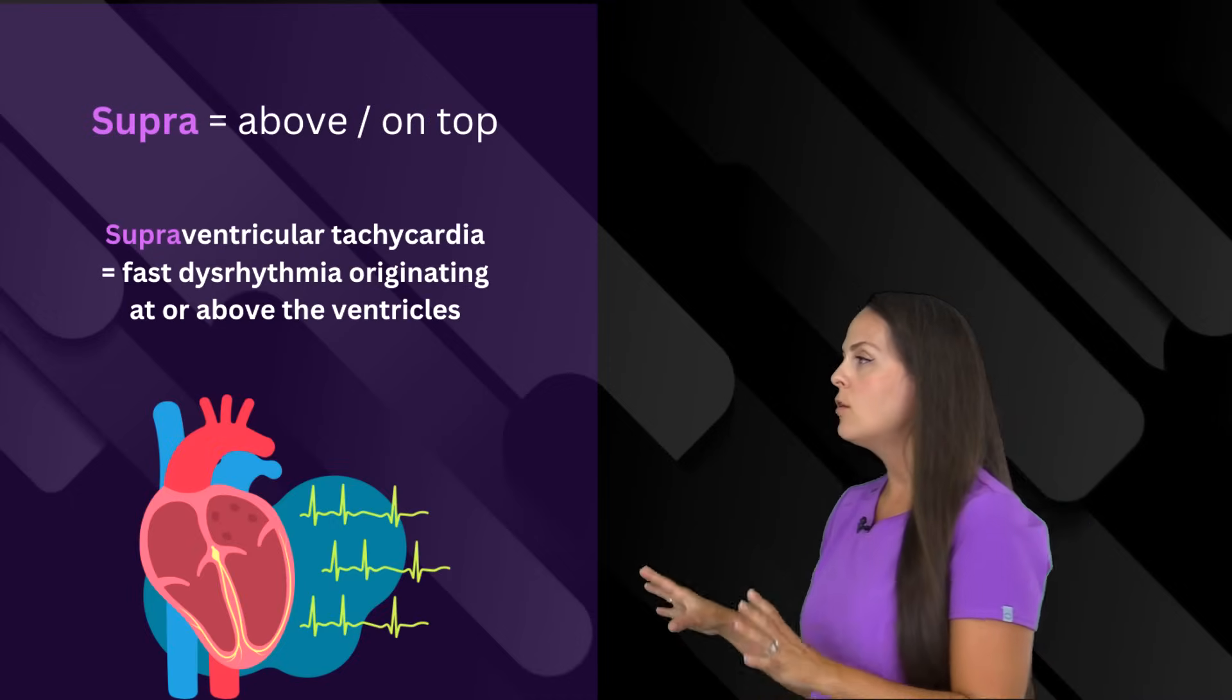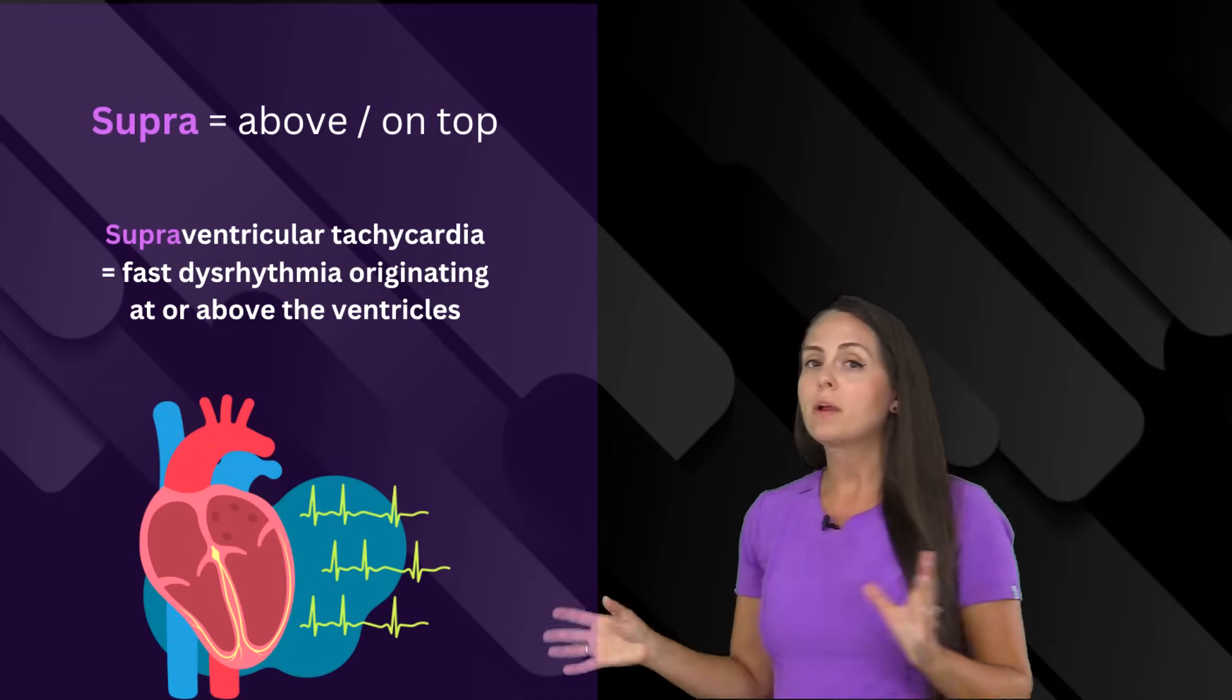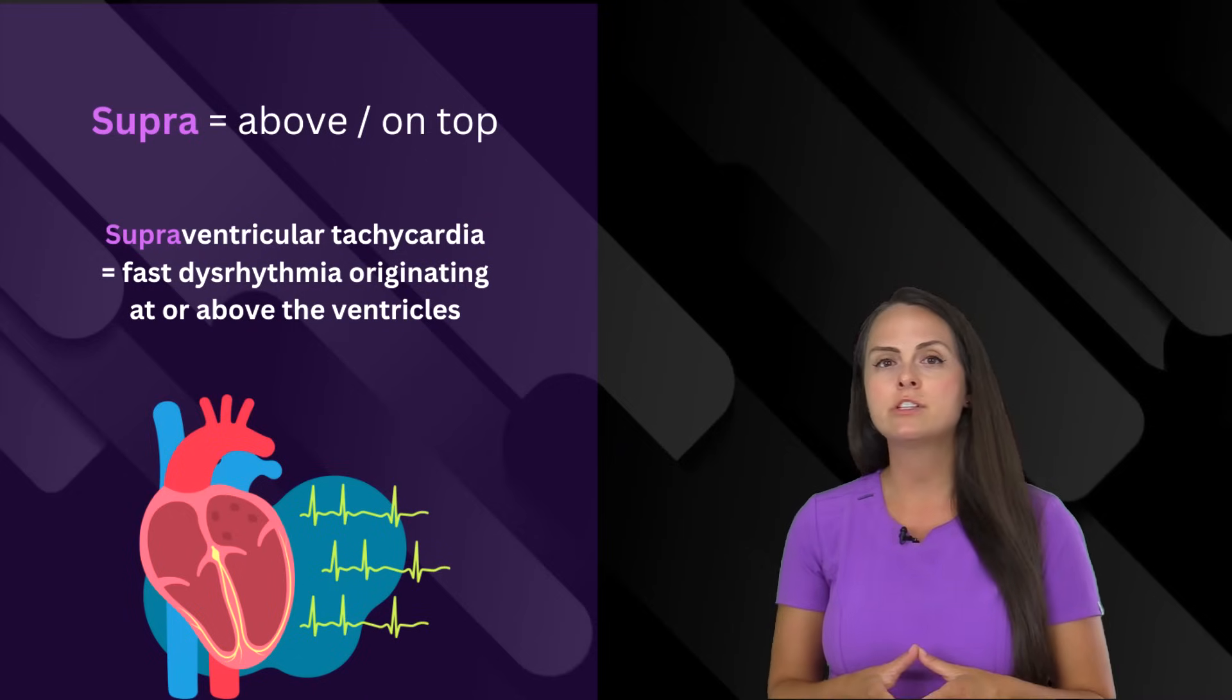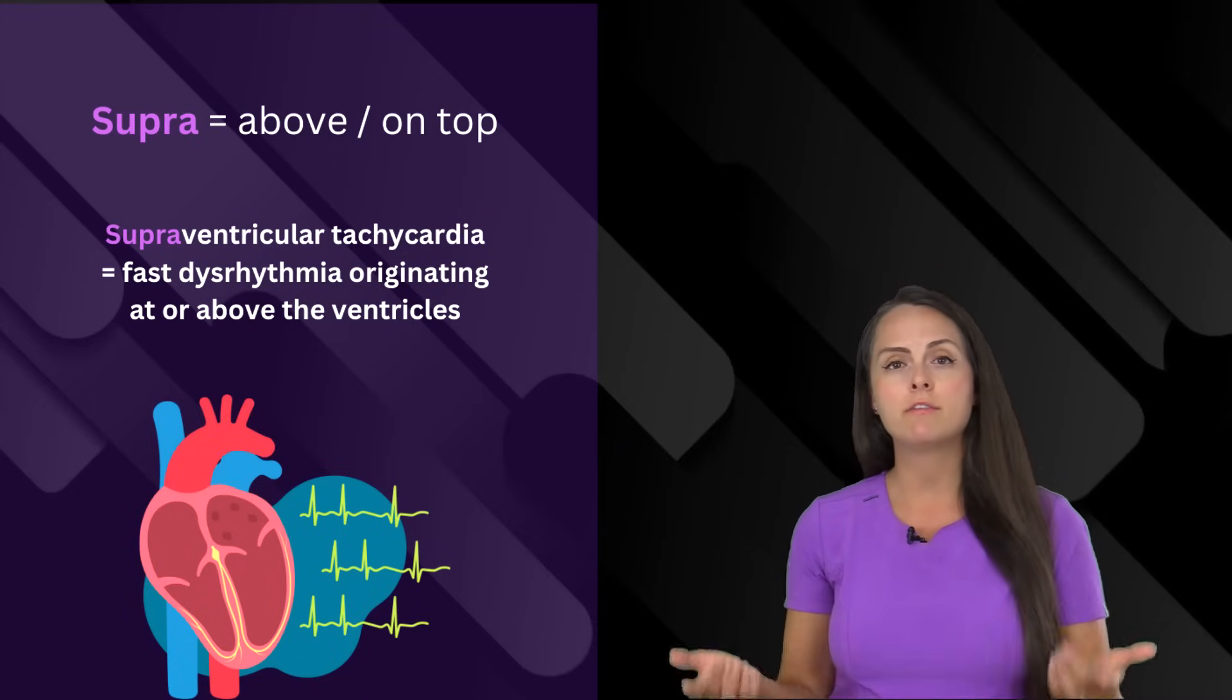Supra means above or on top. Supraventricular tachycardia means that this is a rhythm that's really fast that originates above or on top of the ventricles.